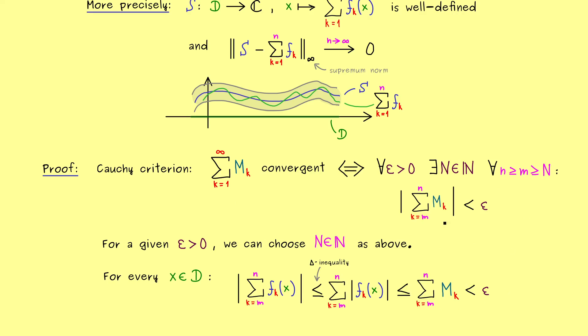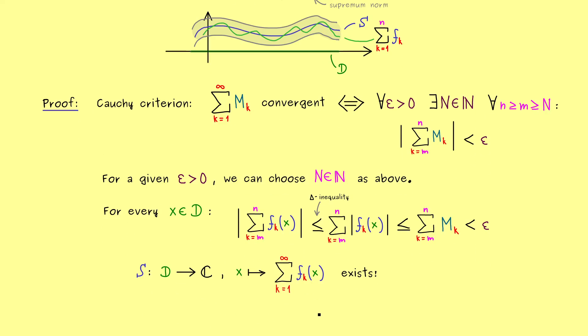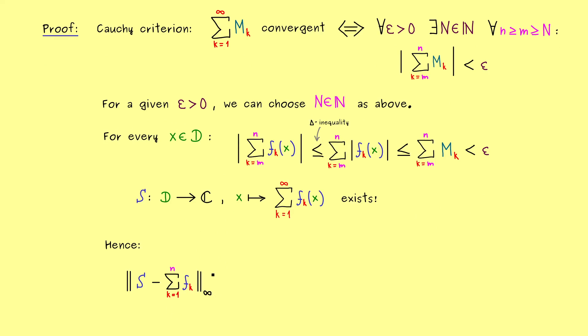In other words, the Cauchy criterion now also tells us that this series here is a convergent one. Which already implies that the function S from above is a well-defined function. In other words, it exists and it makes sense to talk about it. And that's what we will do now, because we want to talk about the supremum norm. More concretely, we want to take the difference of S with the partial sums in the supremum norm.